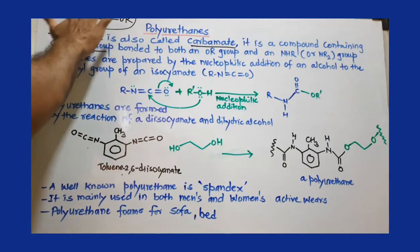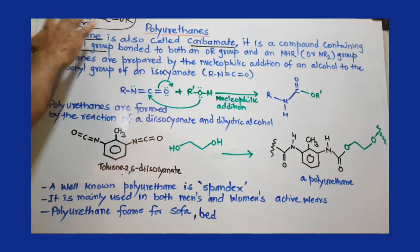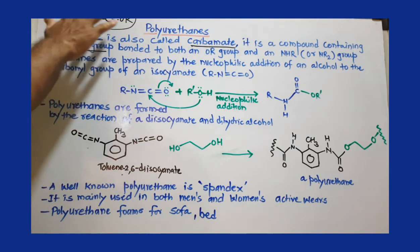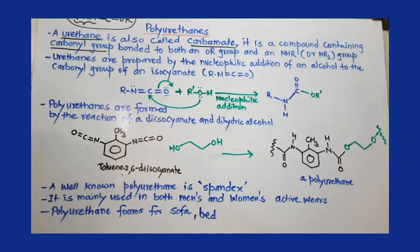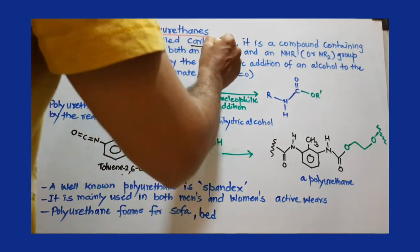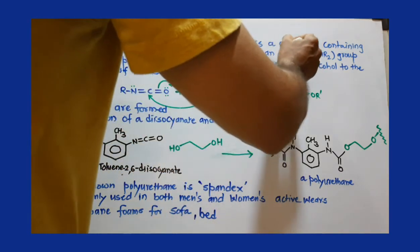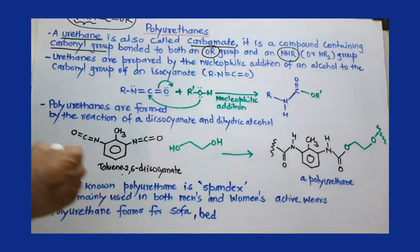This compound is called urethane, and when this unit is repeated a number of times we get polyurethane. It is important: having a carbonyl group with OR and NHR or sometimes NR2 groups.